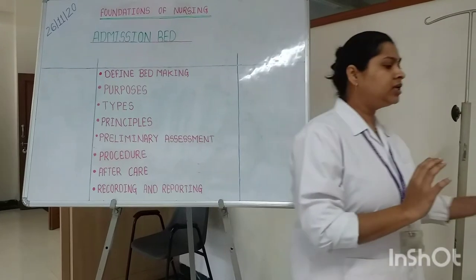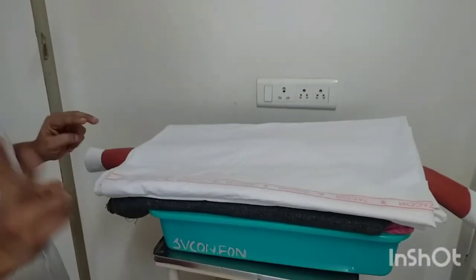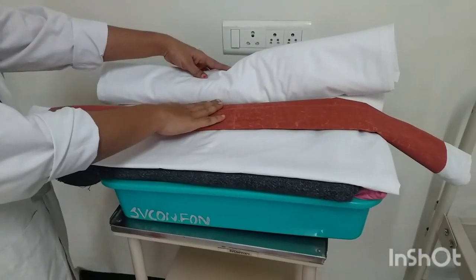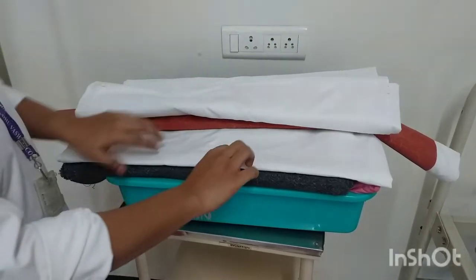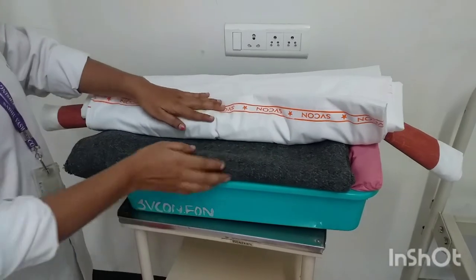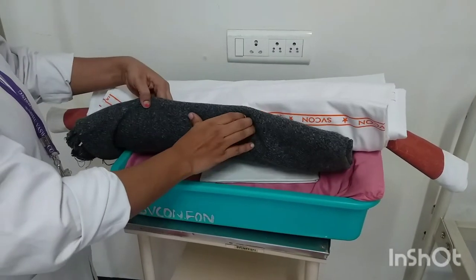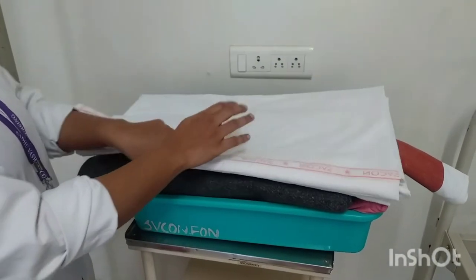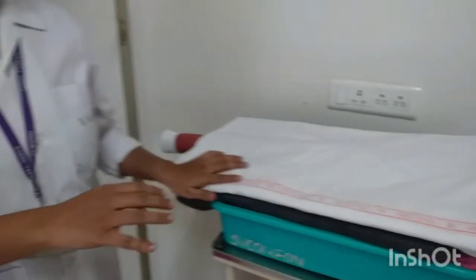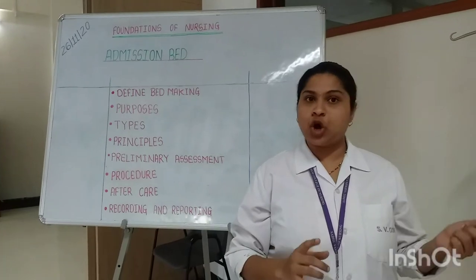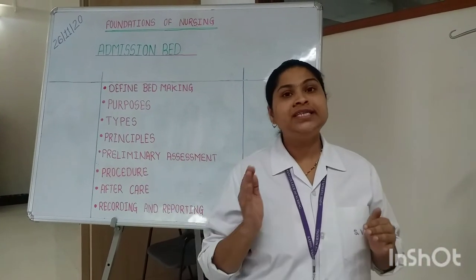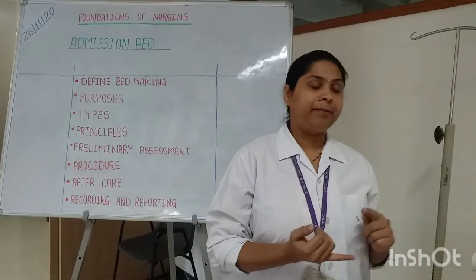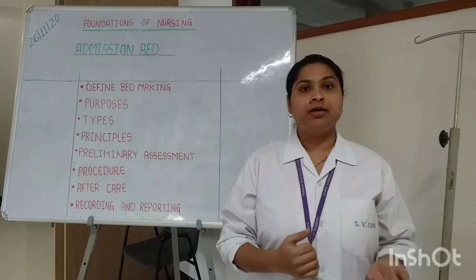Articles required for the procedure include two sheets — a bottom sheet and a draw sheet with a Macintosh to protect the bed linen, a top sheet to cover the patient, one blanket depending on the climate, a pillow and pillow cover. For preparation of the environment, make sure the light is on, fan is off, and if necessary provide a screen for patient privacy.